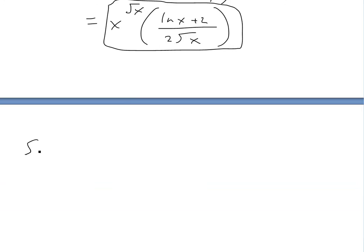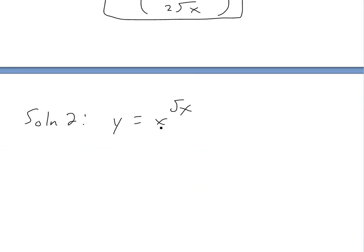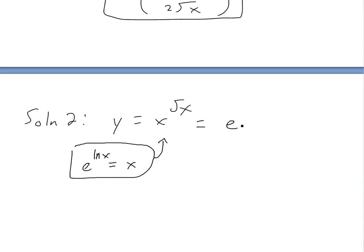Now solution 2 is actually pretty ingenious — my calculus book has it. If we have y equals x to the square root of x, we can use the property that e to the ln of x equals x. So we can rewrite x as e to the ln x, meaning x to the square root of x becomes e to the power of ln x, raised to the square root of x. Using log properties, the exponents multiply, giving e to the power of square root of x times ln of x. Now we can take the derivative directly.